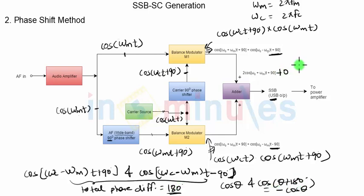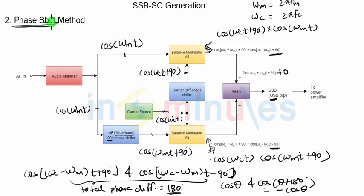This different phase shift is achieved because of the very specific structure of phase values on the input side. Hence this method is called the phase shift method, because we are phase-shifting the carrier and the modulating signal and then feeding them to the two balanced modulators. The whole advantage of using this method is to remove the need for filter design — we are not using a filter anywhere.